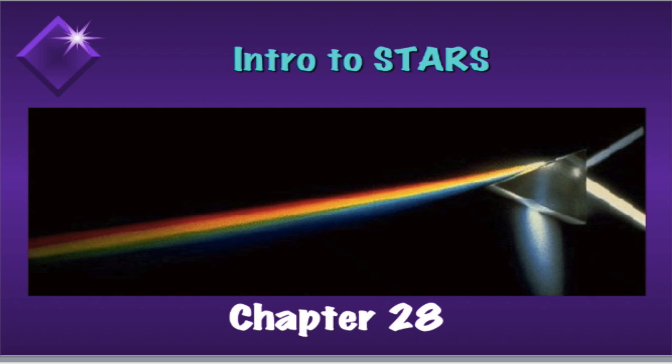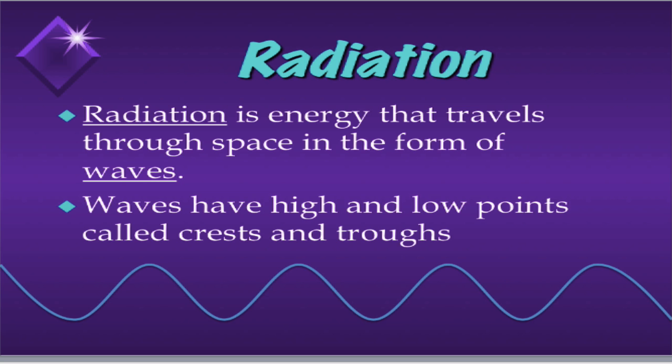In this series of videos, we will review and discuss the properties of light, the electromagnetic spectrum, and spectra of light. Radiation is energy that can travel through space in the form of waves. The visible light that we see from the stars is an example of radiation. There are many different types of radiation that we will discuss later in this video. Right now, I want to discuss the properties of waves.